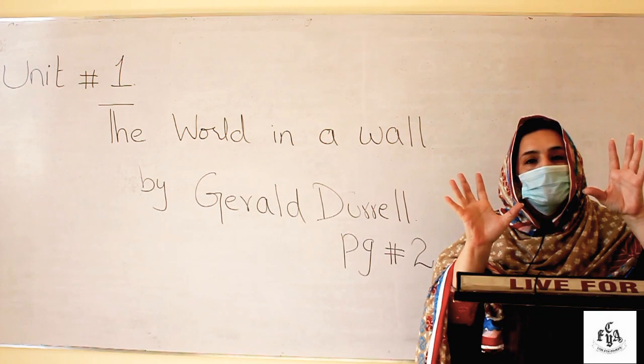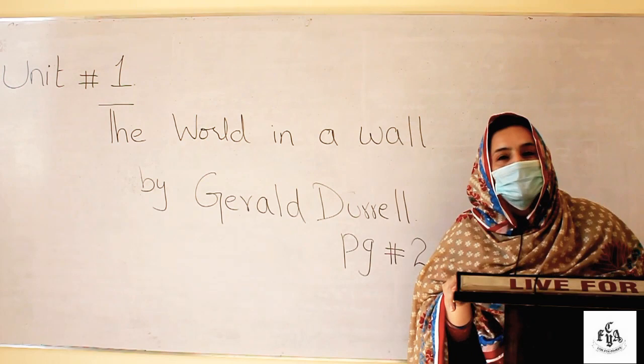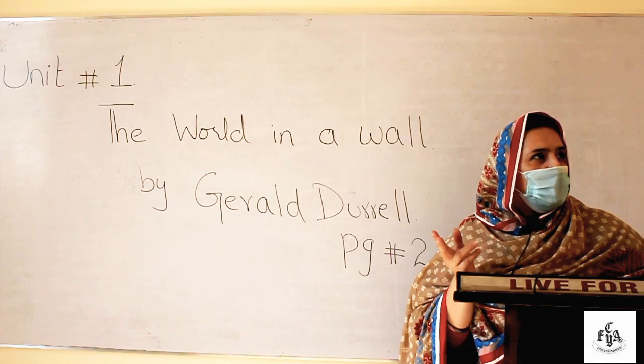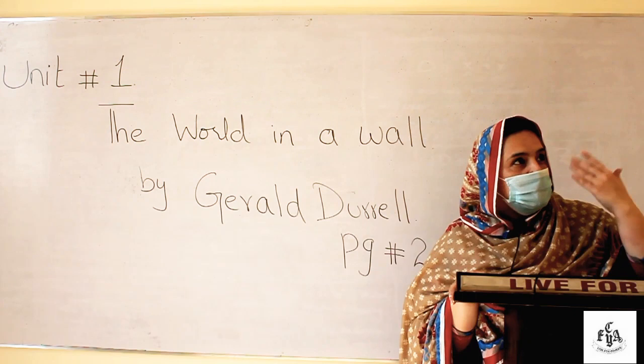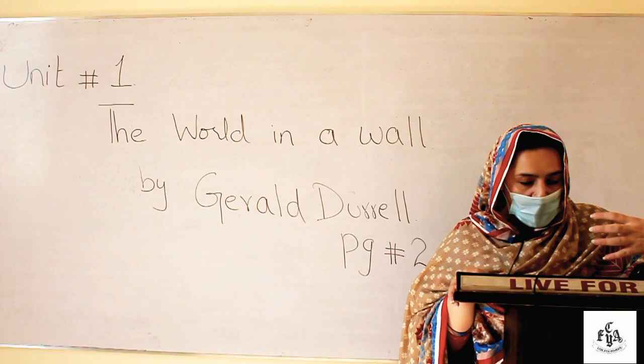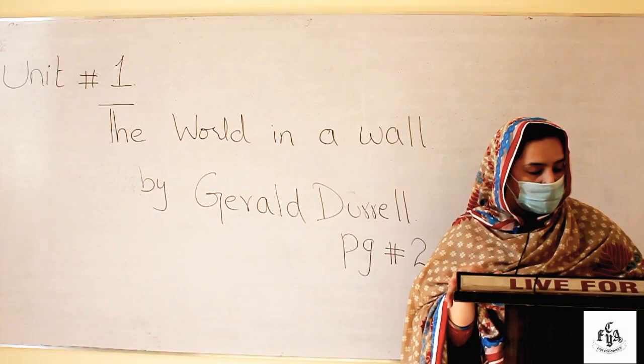You can understand by the title that there is a complete world in a wall — there are so many creatures: insects, spiders, flies, and lizards living there. Sometimes when we see different kinds of small insects and animals on a wall, we realize there are certain things which live over there. Now let's give it a start.